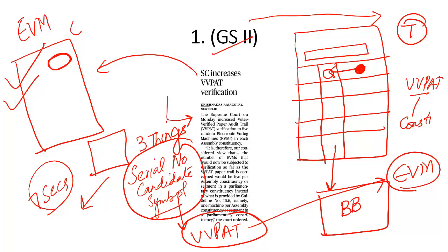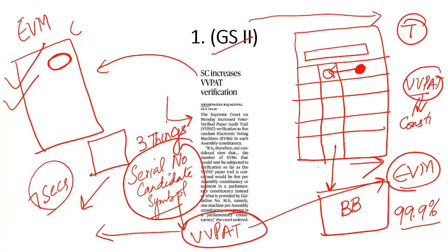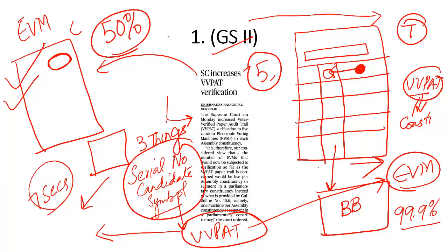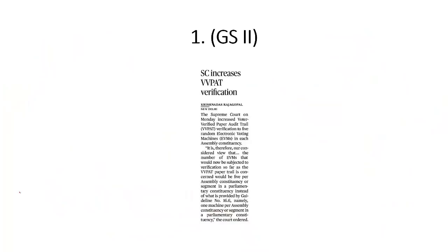We have realized that EVMs and VVPATs together are more than 99.9% accurate — the votes counted from VVPAT boxes match the votes on EVMs. But opposition political parties approached the Supreme Court, asking it to direct the Election Commission to count 50% of VVPATs per constituency. The Election Commission said this would delay results by at least 6 to 7 days. The Supreme Court has now ruled that 5 VVPAT machines will be counted per constituency.